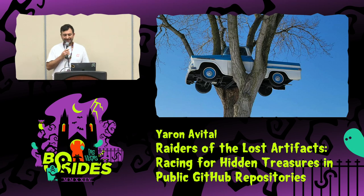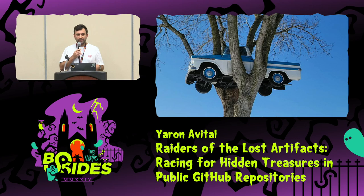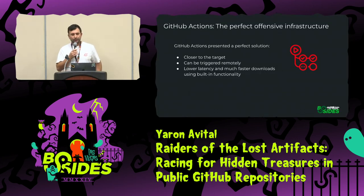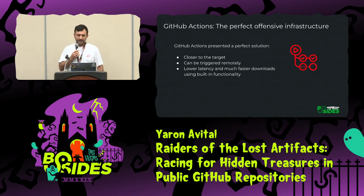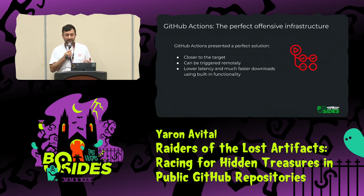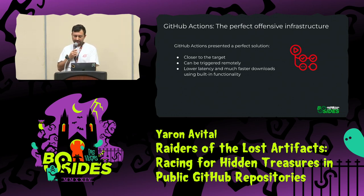Sadly, I was nowhere near winning any race condition — I simply wasn't fast enough, because downloading the artifact took a lot of time. But then I had a really cool idea: why not use GitHub Actions as an attack infrastructure? I could be much closer to the target, it can be triggered remotely, and it offers much lower latency and faster downloads. So I did exactly that.